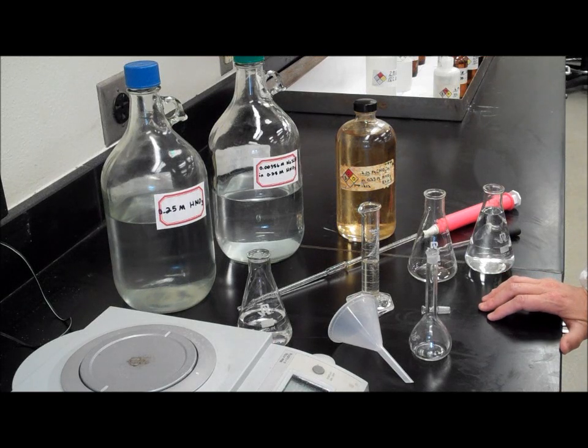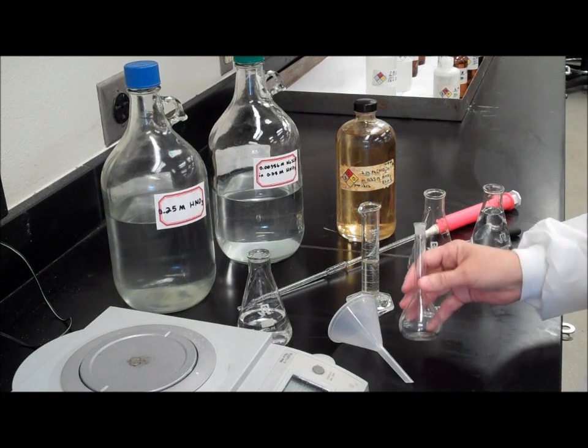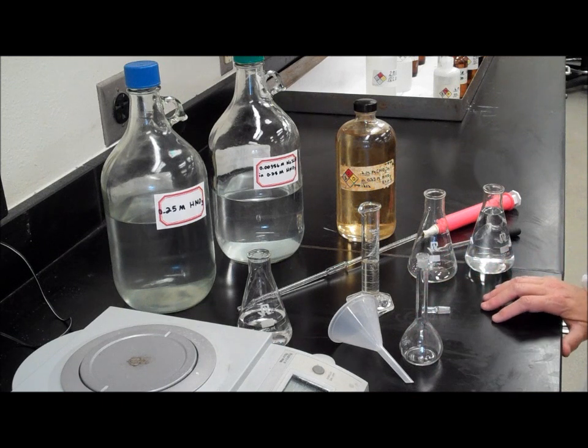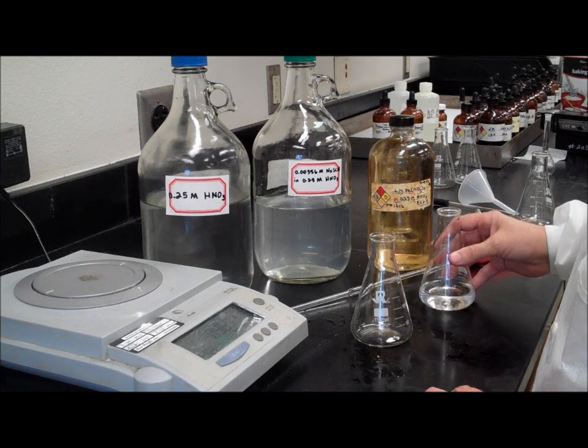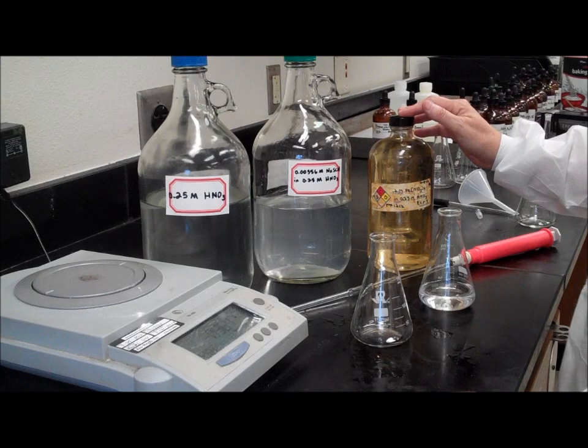In this video, I'll demonstrate how to make solutions 1 through 6 according to the volumes listed in Table 4.1 of your lab manual. You will be using your stock solution of sodium thiocyanate and 0.2 molar iron nitrate.